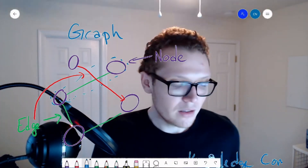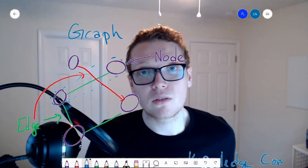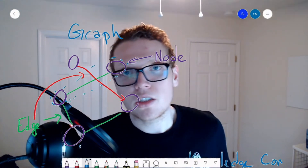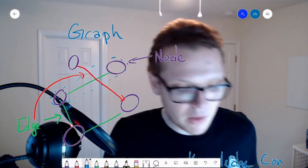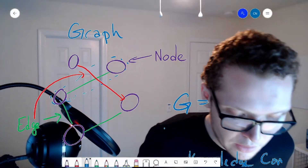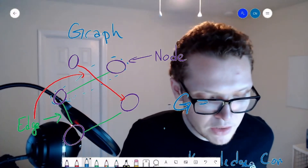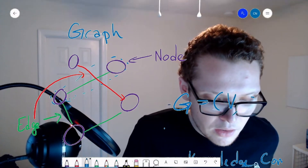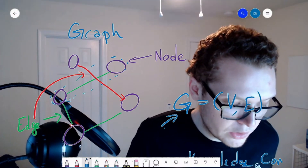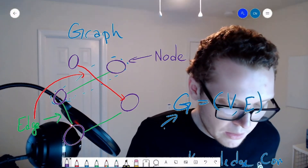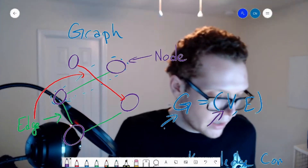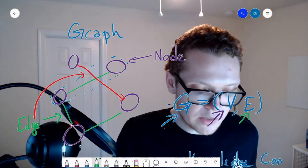You might encounter nodes being called entities or vertices — they're all the same thing — or edges being called edges or relationships. You might also see notation in a paper where G equals V of E: G is the graph, V represents the nodes or vertices, and E represents the edges.